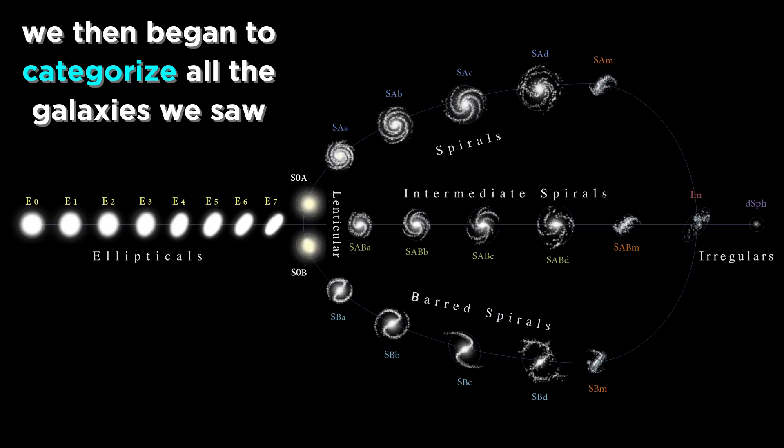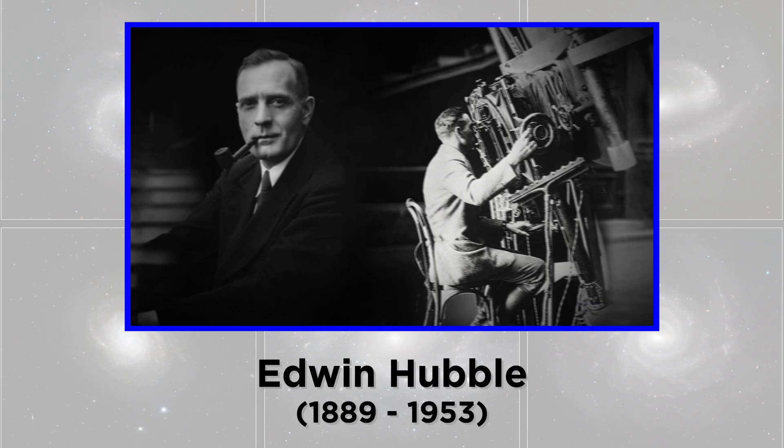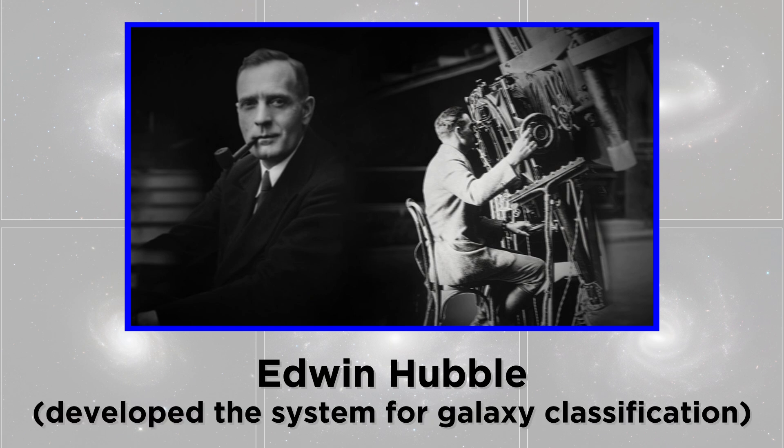And we began to categorize them as spiral galaxies, elliptical galaxies, and all the other varieties we learned about earlier in the series. One person who made considerable contributions to the task of categorizing galaxies was Edwin Hubble, and he developed the categories and subcategories we use today.